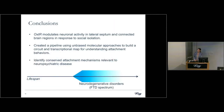In conclusion, the oxytocin receptor really modulates neuronal activity in the lateral septum and other connected brain regions in response to social isolation. We are currently working to further characterize the molecular, developmental, and behavioral phenotypes we see as a consequence of the loss of this receptor.